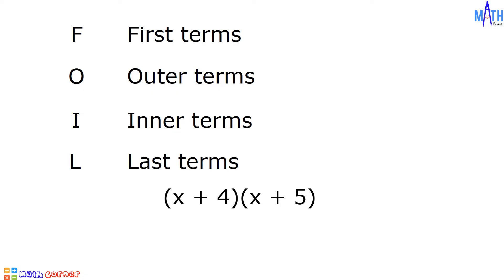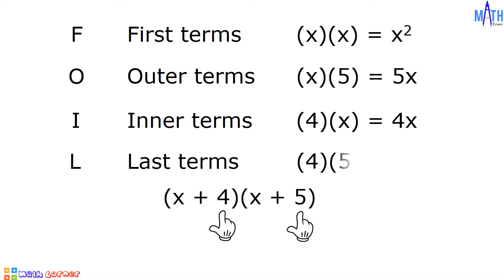Example number one, X plus 4 times X plus 5. First terms, X times X equals X squared. Next, outer terms, X times 5 equals 5X. Inner terms, 4 times X equals 4X. And last terms, 4 times 5 equals 20.